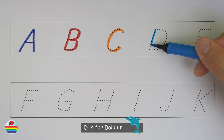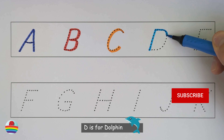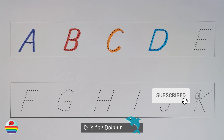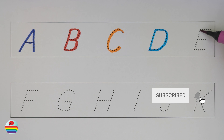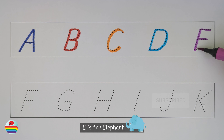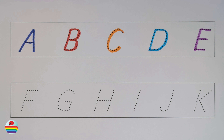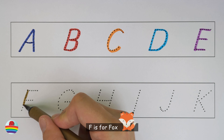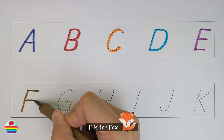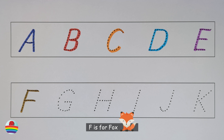D. D is for dolphin. D. E. E is for elephant. E. F. F is for fox. F.